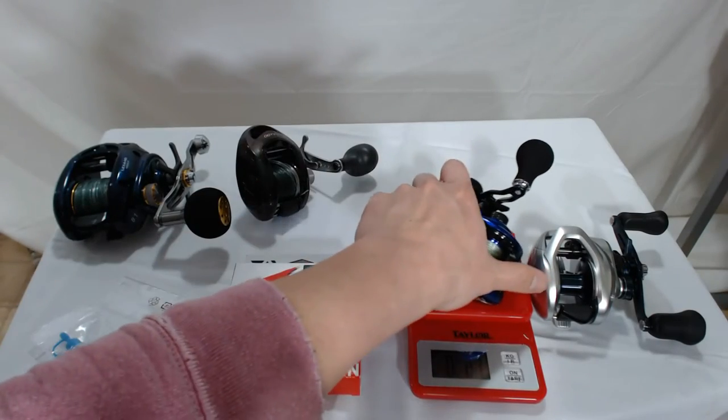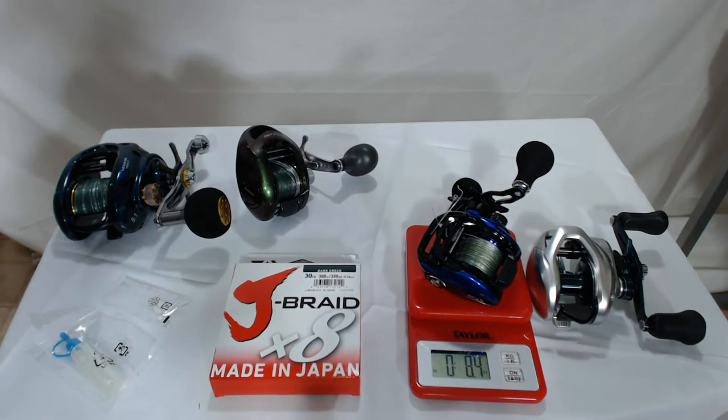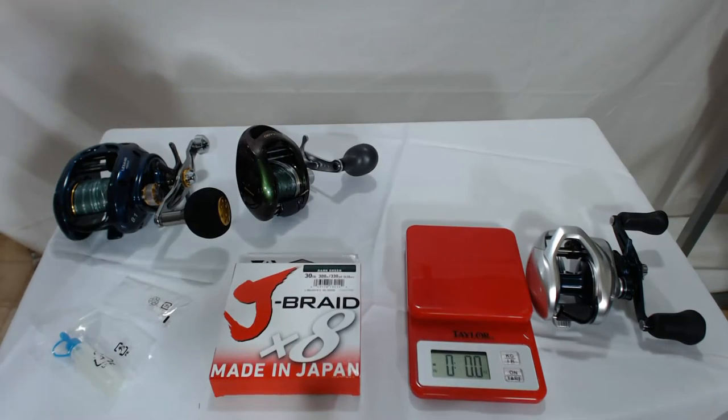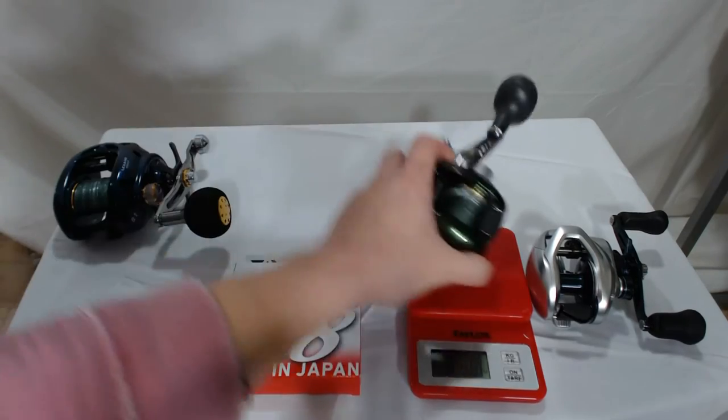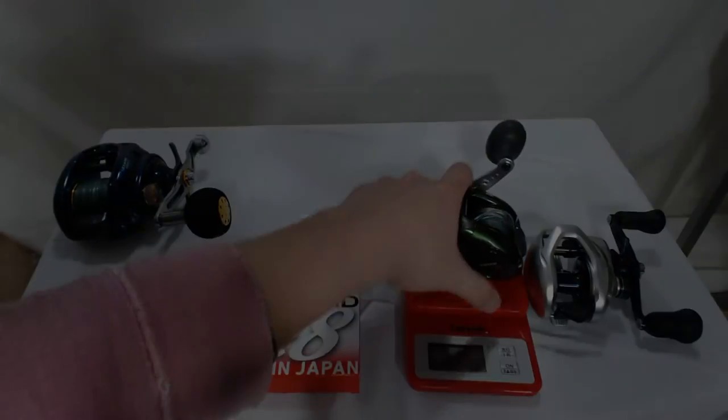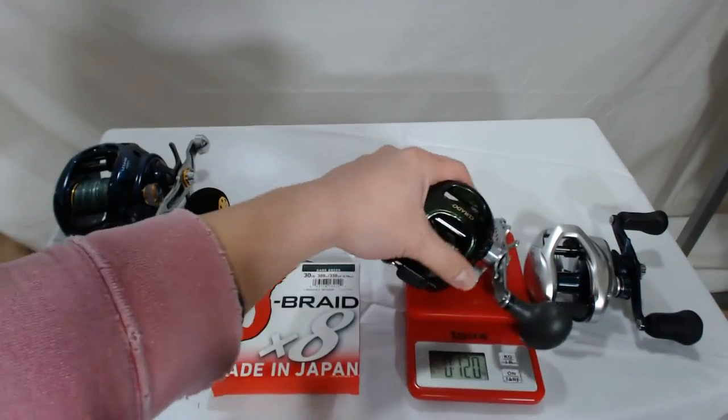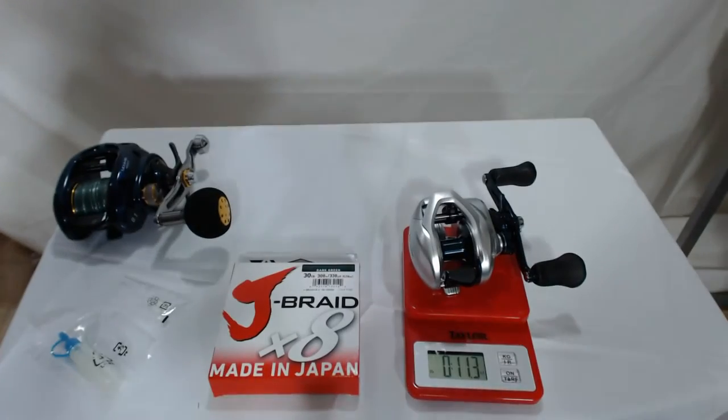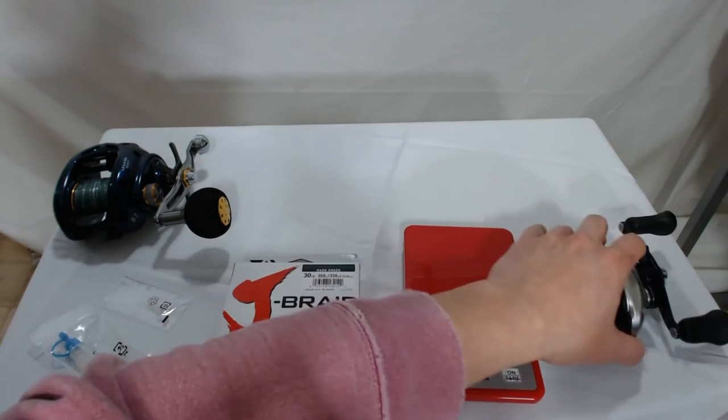Just in comparison, the Coastal 200 is 8.4, 8.5, and that's with the line. The Shimano Curato is 12 ounce even. Going back to the Tranx, 11.3. So there's not that much difference in weight and I guess I should have done my homework.